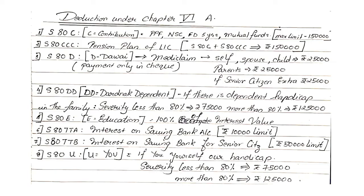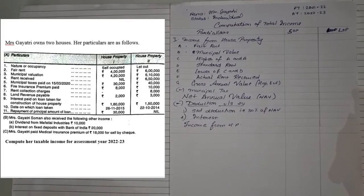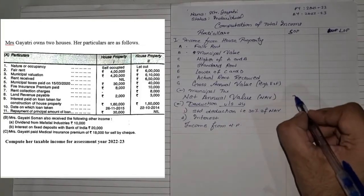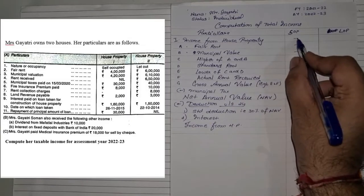So let us see how to solve the sum when they ask us to find total income when they are giving you a sum based on house property. Now let us see how to solve this particular sum. In the question it was given that Ms. Gaitri has two houses. The first one is SOP, the second one is LOP.